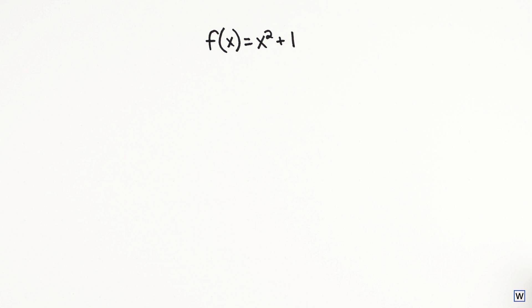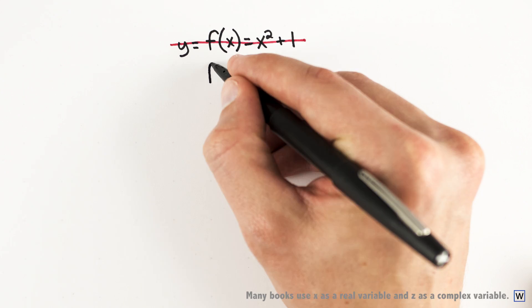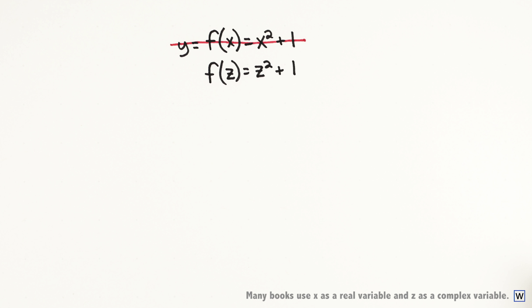Let's try it out with our original function, f of x equals x squared plus 1. Before we begin, let's make a quick variable change to make things easier down the road. We'll change the name of our input variable from x to z, and call our output variable w.